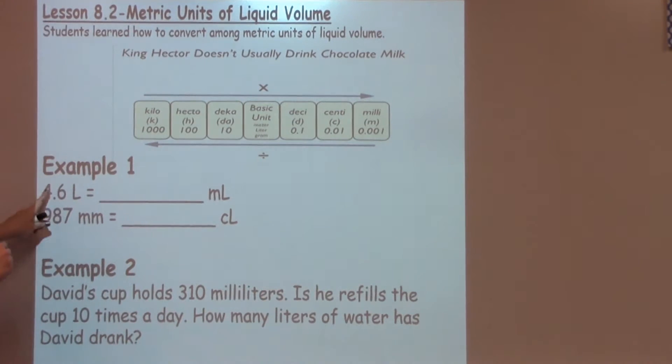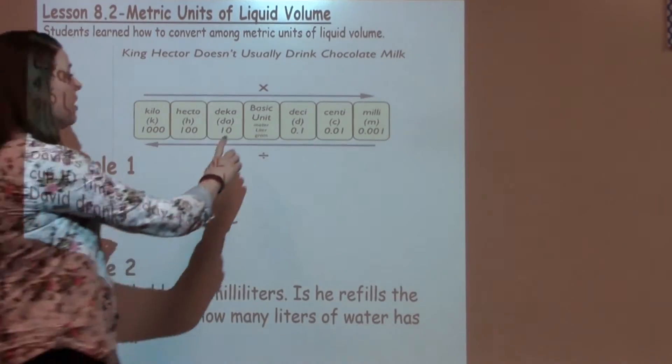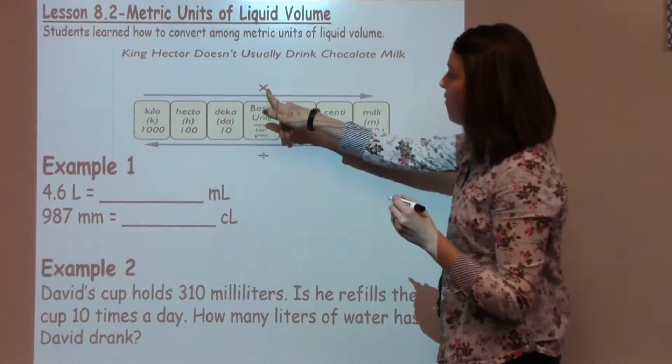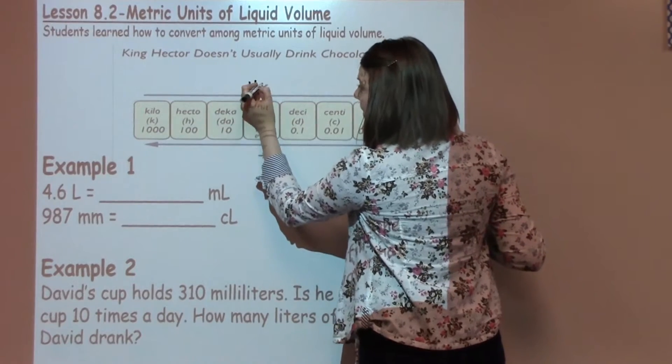So let's look at example number one. It says 4.6 liters and we need to convert that to milliliters. The first thing that we want to do is take this 4.6 and put it on our liter, which is going to be our basic unit. So I go ahead and write it right above my liters, above my basic unit.